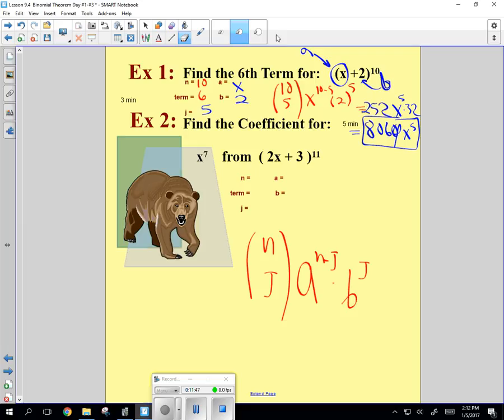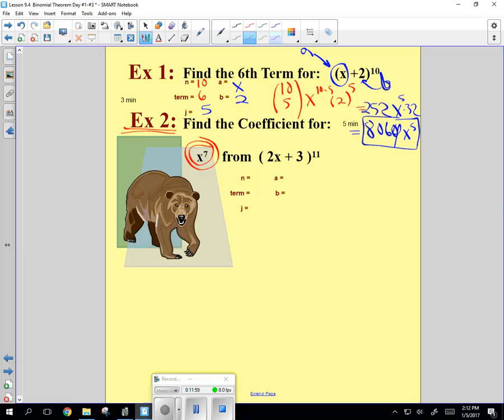All right. Well, now we're going to do the same thing, except it's going to be a little bit different. It says, for this example, find the coefficient for the term that has an x to the seventh in it. So let's see what we can find from 2x plus 3 to the 11. What's the 11? What variable is that? And what's a? 2x. So what's 3? B. Good. Now the term is a little tricky, but think of it this way. Put up your right hand. And close your fingers and thumb. And we start out at x to the 11th is the first. So would you put your thumb up for x to the 11th? The next term will be x to the 10th. Then the next term will be x to the 9th, x to the 8th, x to the 7th. What term is that? Fifth.